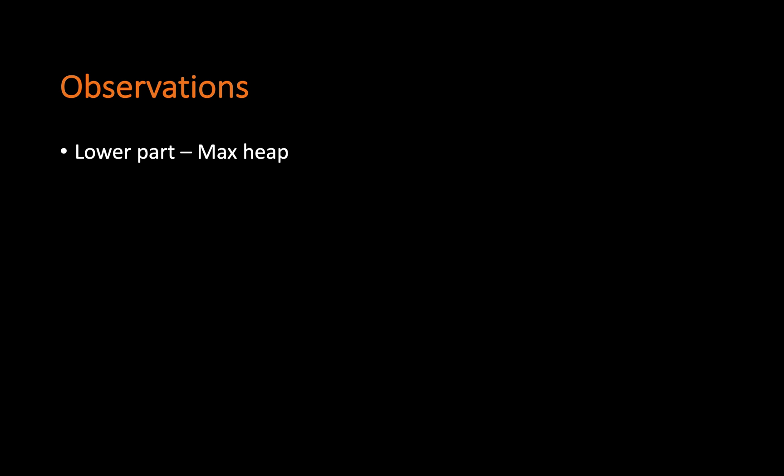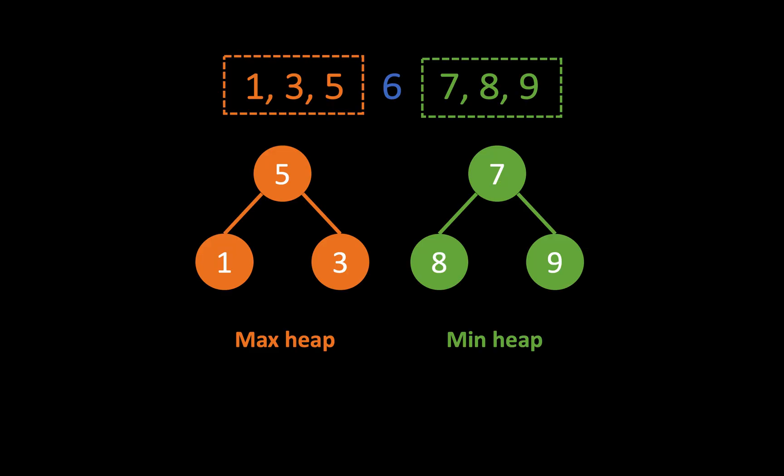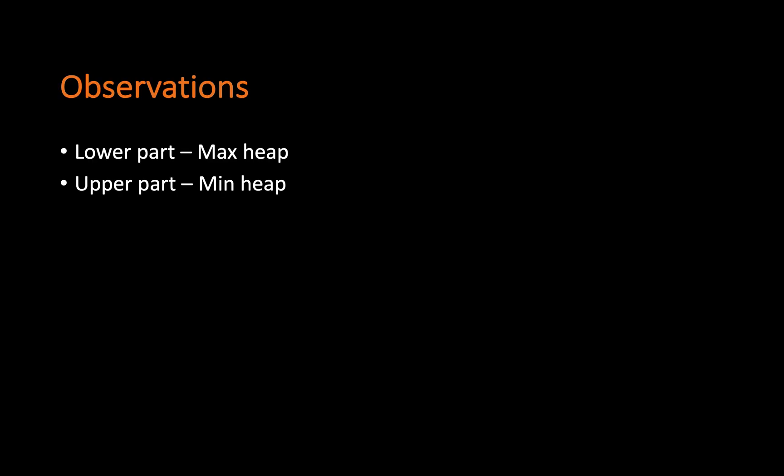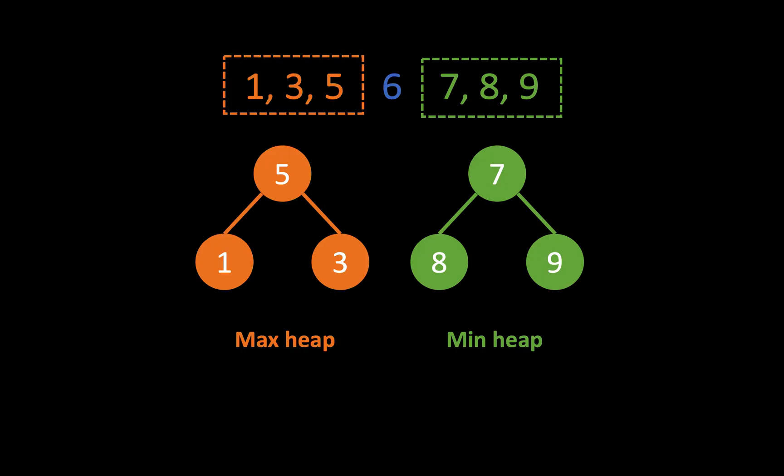Now I have some observations. The first observation is that the lower part is the max heap and the upper part is the min heap. Also, this is a very important observation: the difference between the heaps' lengths cannot be greater than 1. You see that the heaps here are quite balanced - 3 elements each - and 6 is the element that lies in between.